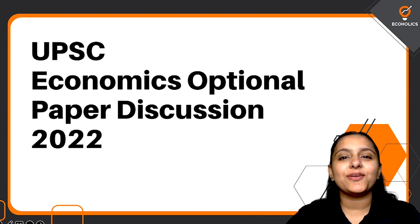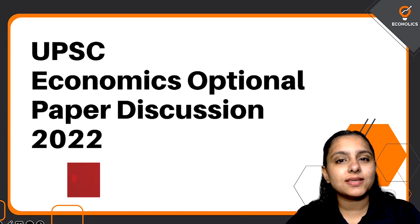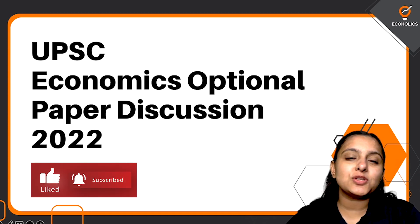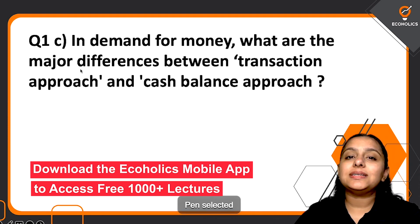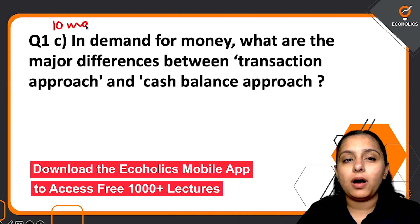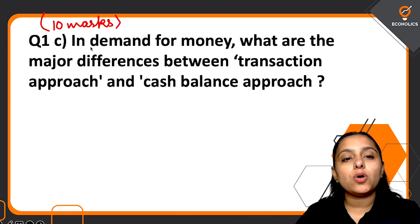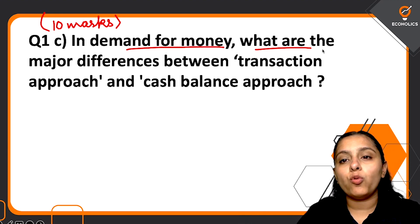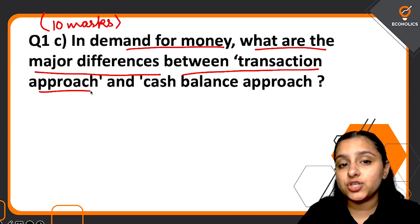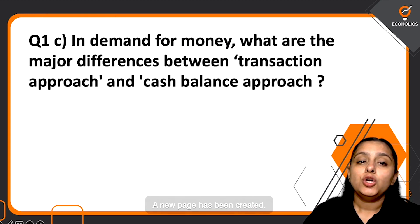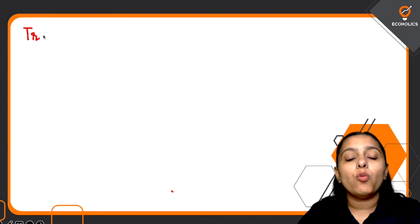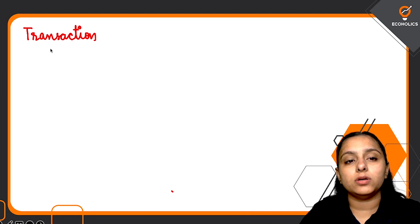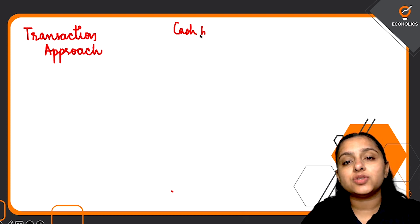Hello everyone, welcome back to the channel of Ecoholics. Here I am again with the discussion of one more question from the Economics optional paper 2022. This is question number one, part C, which came for 10 marks. The question talks about demand for money: what are the major differences between the transaction approach and the cash balance approach? I'm writing the two here — transaction approach and cash balance approach.